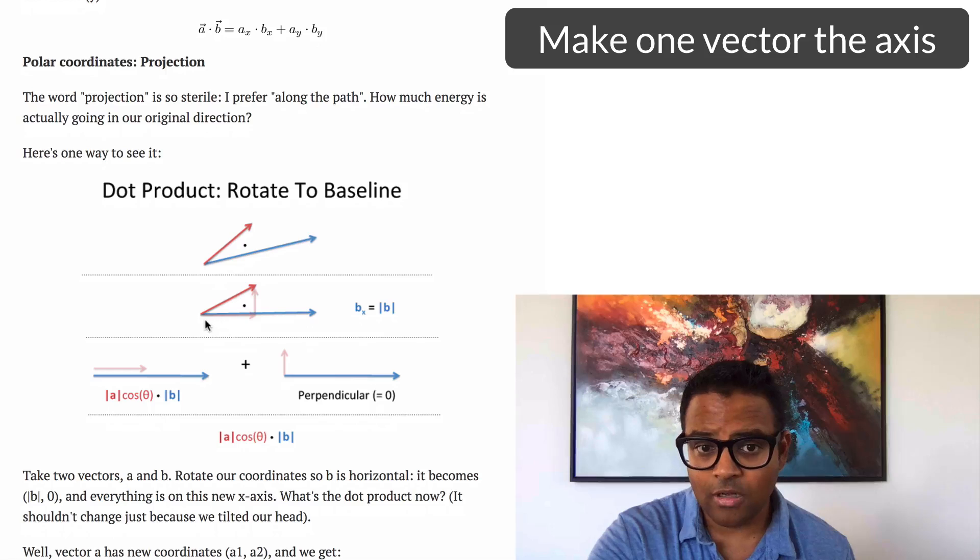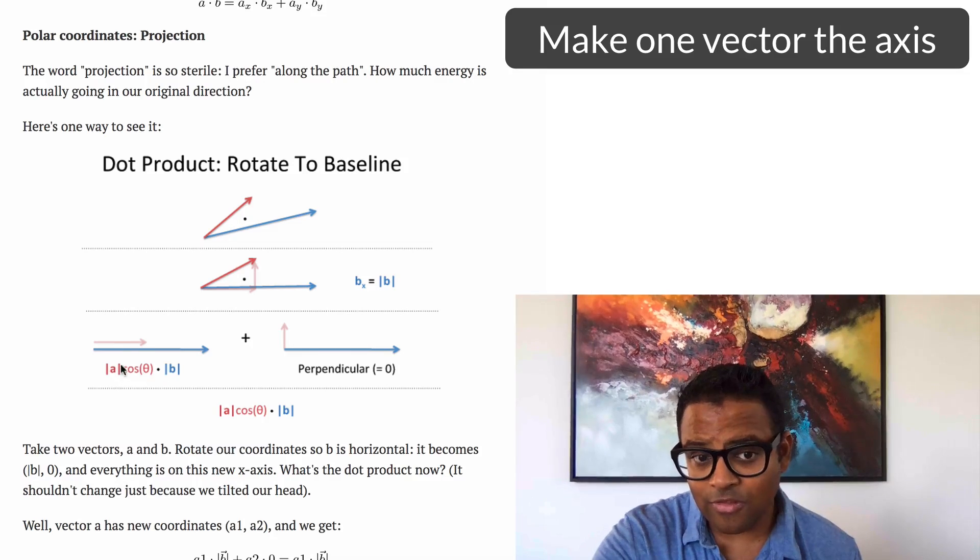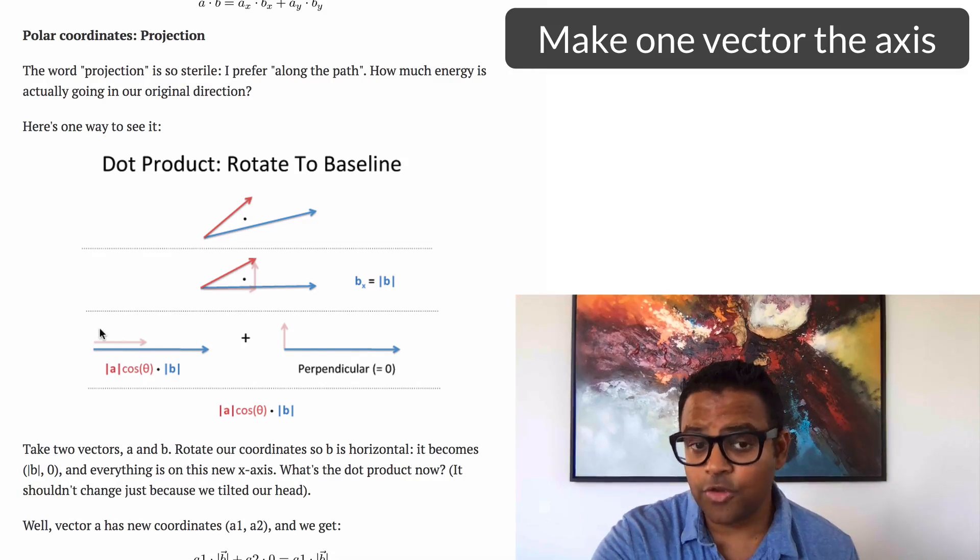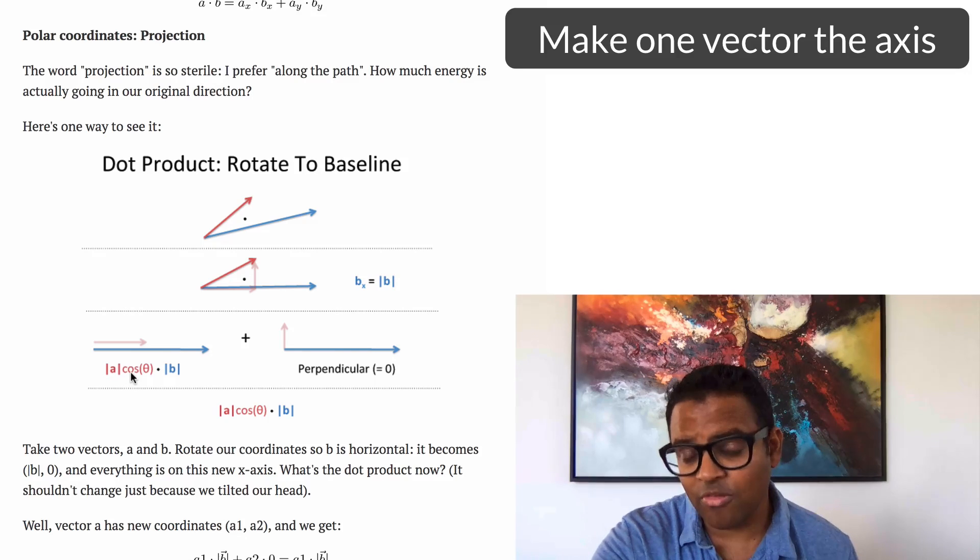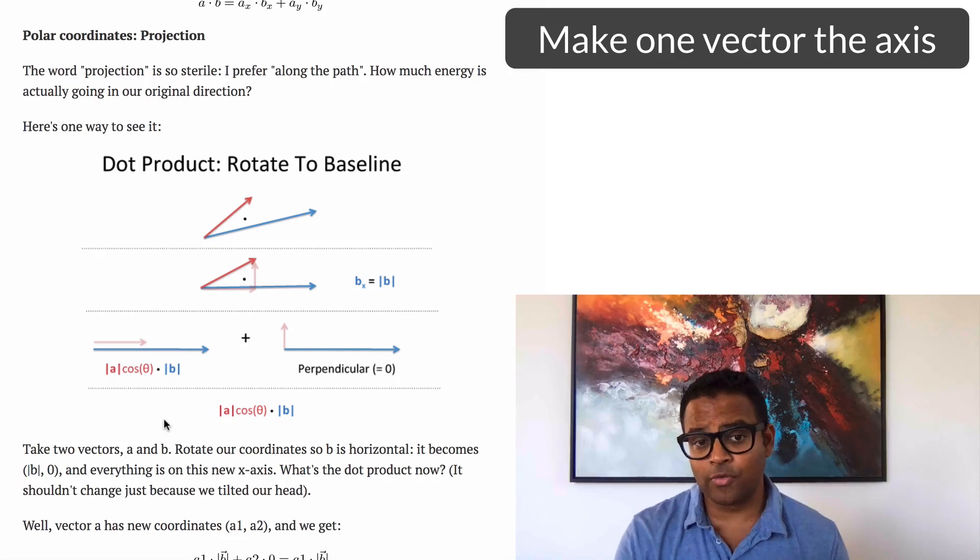So I'm just going to turn my head and pretend that one of these vectors is horizontal. Then the other vector here has a horizontal and vertical part, but only the horizontal part counts. So the red vector, we've kind of rotated everything, and the amount that the red vector has in the direction of the blue is this. It's the length of a times cosine theta, which is the angle between them. So we get this relationship, which is essentially the amount of overlap.